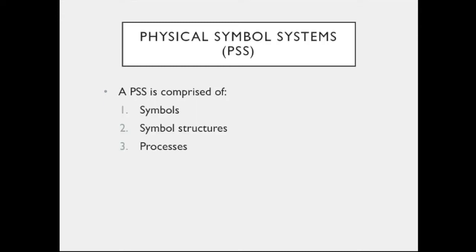A physical symbol system is comprised of symbols, symbol structures, and processes. Or basically just symbols and processes, since symbol structures are themselves composed of symbols. But later we see that processes can be encoded as symbol structures — it's basically all symbols.